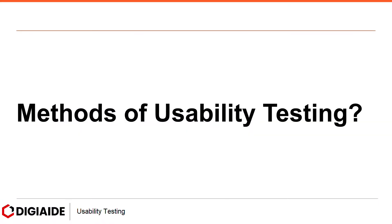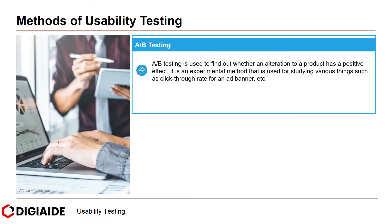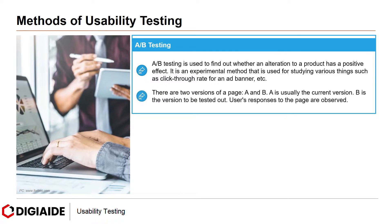Moving on to methods of usability testing. First, A-B testing. A-B testing is used to find out when an alteration to a product has a positive effect. It is an experimental method used for studying various things such as a click-through rate for an ad banner. There are two versions of a page, A and B. A is usually the current version, B is the version to be tested out. Users' responses to the page are observed. This method is also known as split testing.